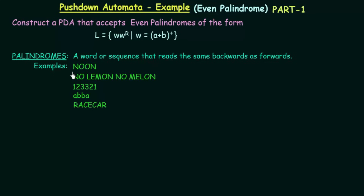For example, the word 'Noon' (N-O-O-N) reads the same from front and back. The sentence 'No Lemon, No Melon' is also a palindrome. The number 1-2-3-3-2-1 reads the same backwards. The sequence A-B-B-A is also a palindrome. And 'Race Car' (R-A-C-E-C-A-R) reads the same from both directions. These are all examples of palindromes.